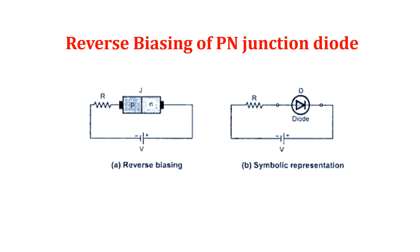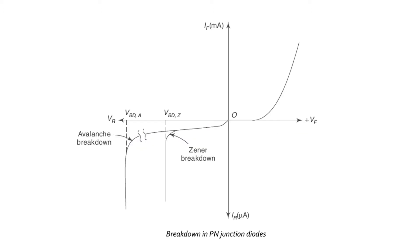Now, let us see the concept of breakdown in reverse biased condition. If the reverse voltage is increased beyond a certain limit, large reverse current can flow and it will damage the diode. This is called reverse breakdown of the diode. Such a breakdown can occur due to two effects, namely avalanche effect and Zener effect.